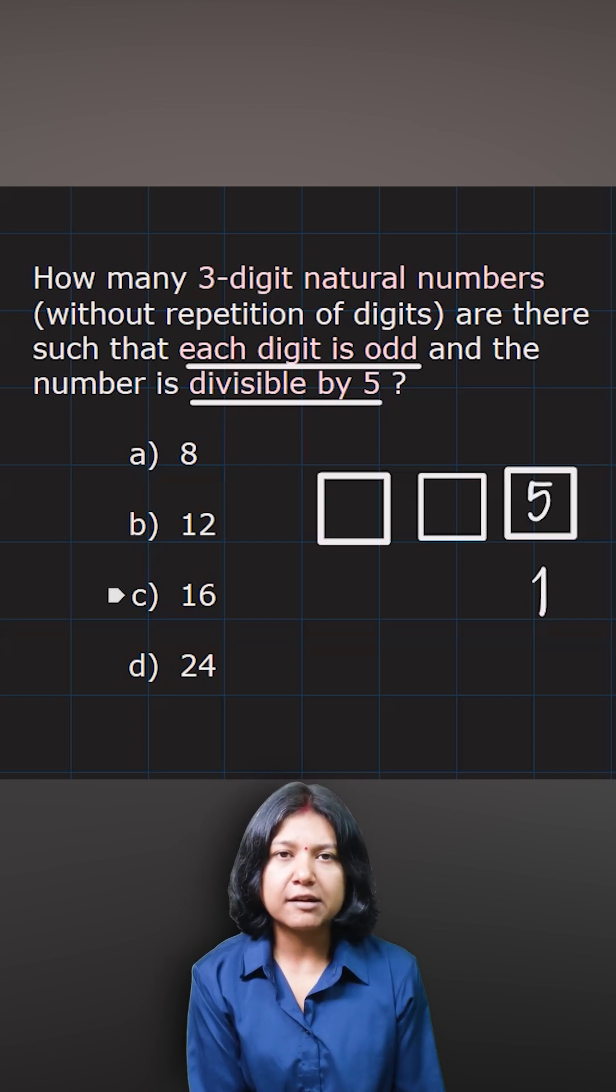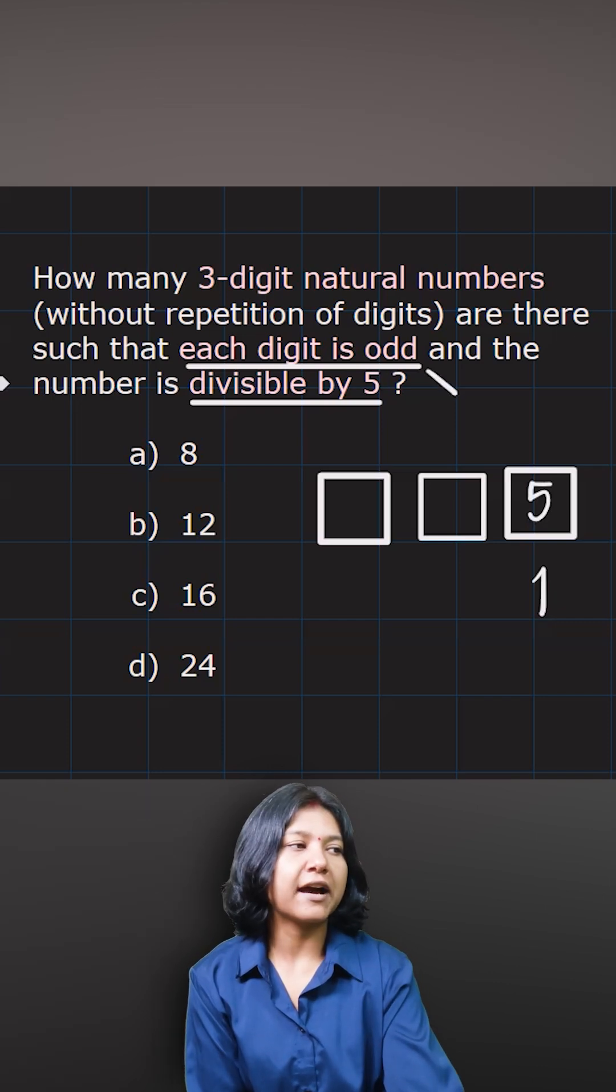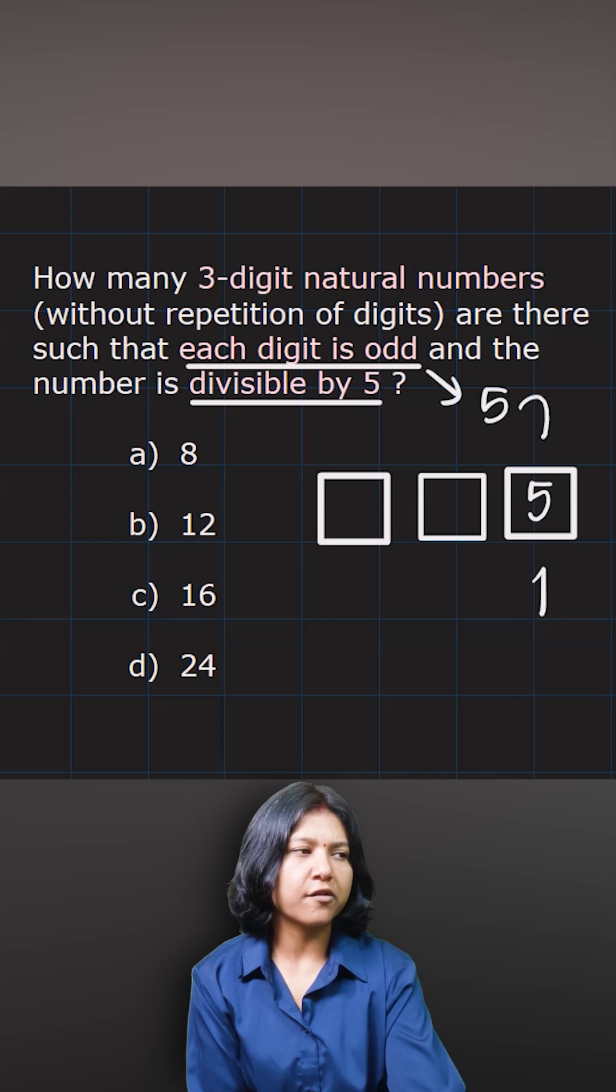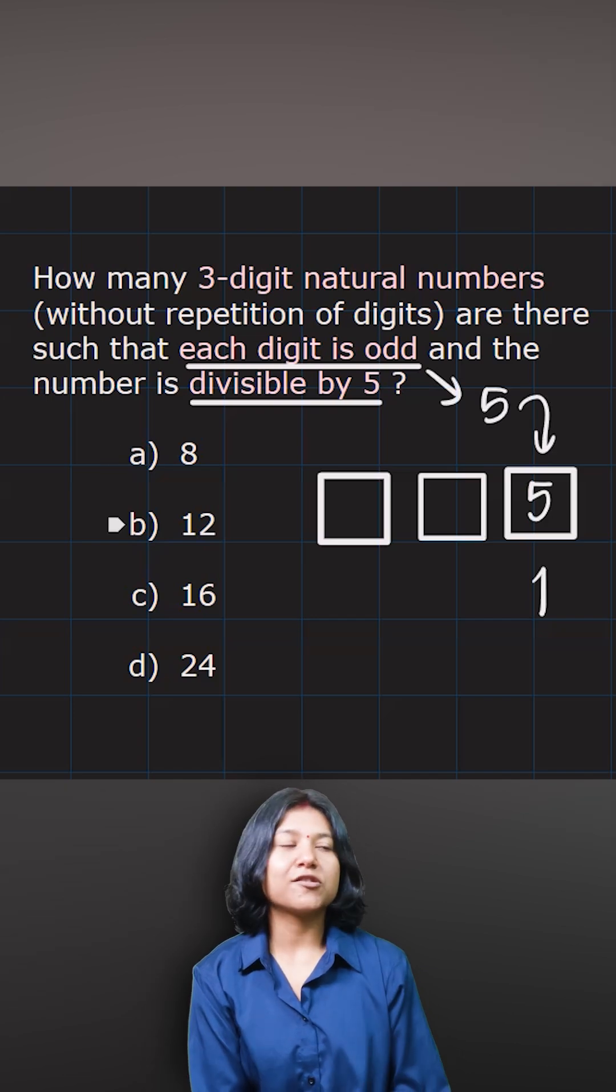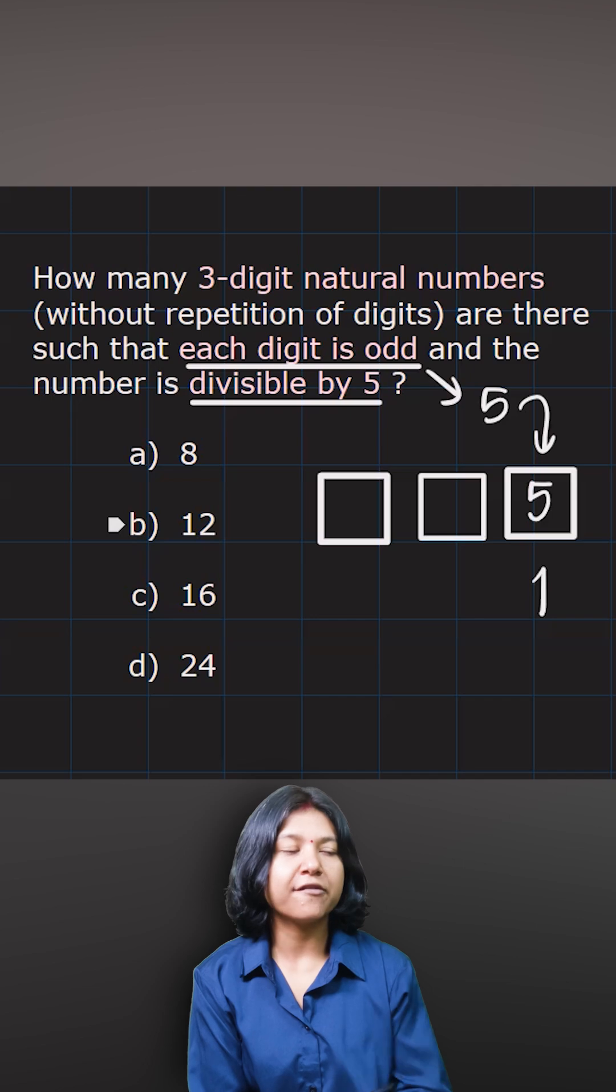Now think about how many odd numbers we have. We have a total of five odd numbers, out of which I've already used one of them to fill up the first place. So the remaining number of digits I'll have is four.